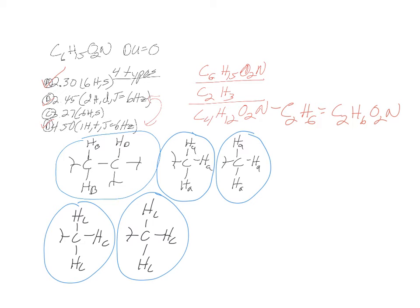Let's subtract that part out — that's minus C2H6, so all I have left is O2 and N. There's no IR, so maybe someone might think it's a nitro group, but at this point I think we can figure it out without the carbon NMR. You already did degrees of saturation, so you know there can't be a carbonyl, pi bond, or ring.